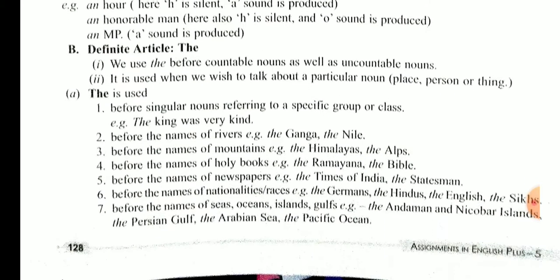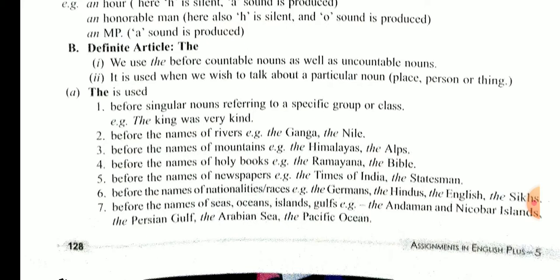अब 'the' use कहाँ कहाँ पर करते हैं हम: Before singular noun referring to a specific group or class - for example, the king, the school, the hospital. Before the name of the river - the Ganga, the Nile. Before the name of the mountains - the Himalayas, the Alps. Before the name of the holy book - the Ramayana, the Bible, the Quran.